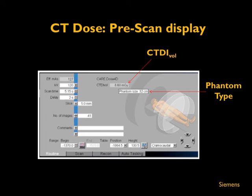Starting with the pre-scan display: shown here is a screenshot of a Siemens CT scanner where, as a technologist inputs the CT protocol and scan parameters, dose information is displayed on screen. The CTDI vol is displayed based on the parameters set for the particular protocol. Each manufacturer is also required to display the type of phantom the value is based on — here, the CTDI vol of 8.6 milligray is based on a 32 centimeter phantom.